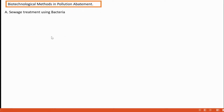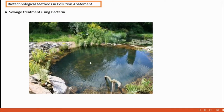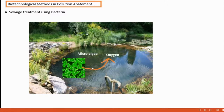Biological methods in pollution abatement include sewage treatment using bacteria. In a pond containing algae, the algae produce oxygen through photosynthesis, and bacteria in the pond use that oxygen to decompose the sewage present — this is sewage treatment using bacteria.